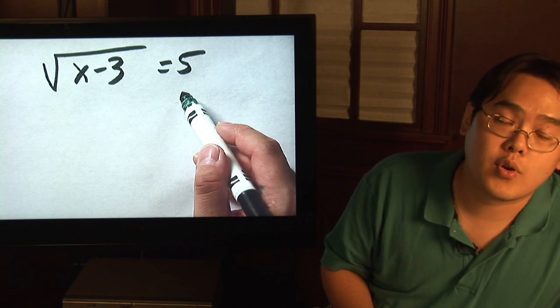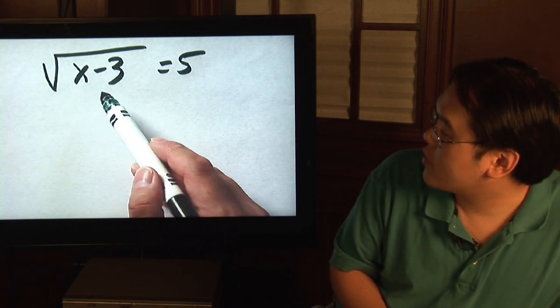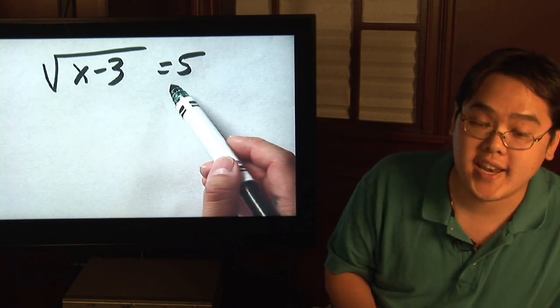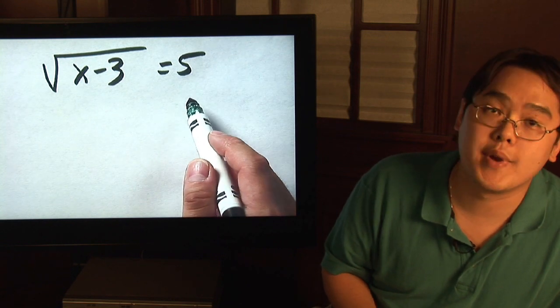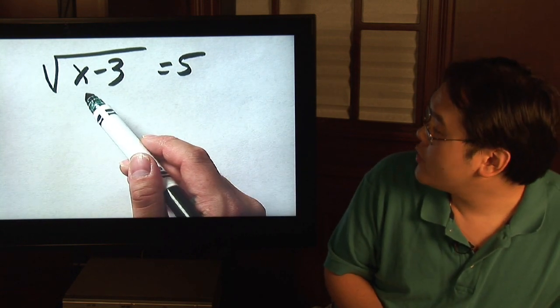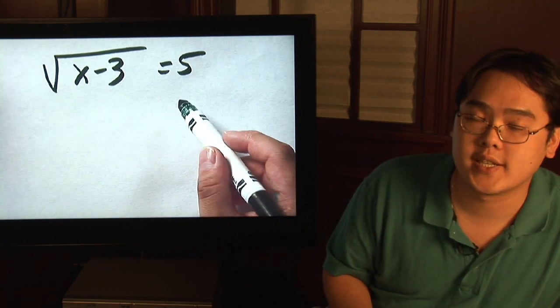Why is that important? Well because a square root, if you notice this is a positive square root, so a positive square root has to give you a positive number. If you have a positive square root and a negative number on the other side, that really makes no sense. So be sure that a square root is on one side and that a positive number is on the other, when it comes to a positive square root.